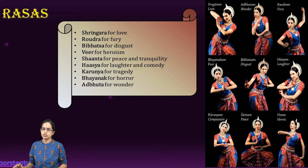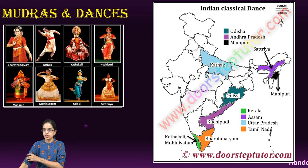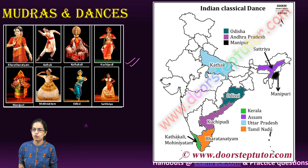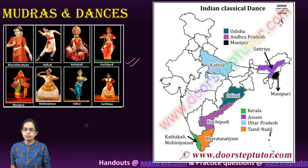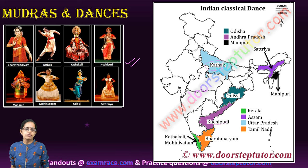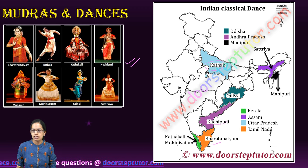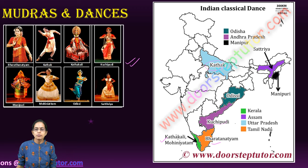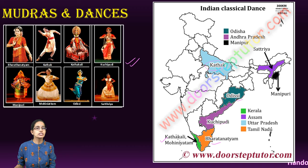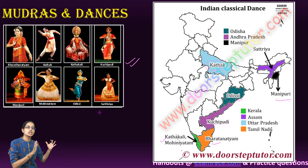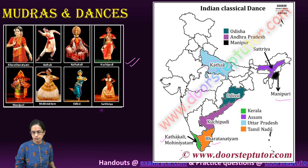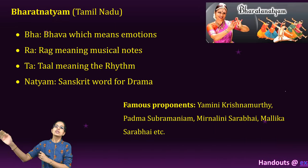Here are some mudras depicting each of these dance forms. Indian classical dance forms include 8 major forms: Kathak in North India; Kuchipudi in Andhra Pradesh; Bharatnatyam in Tamil Nadu; Kathakali and Mohiniattam in Kerala; Odissi in Odisha; and Satriya in Assam and Manipuri in Manipur.